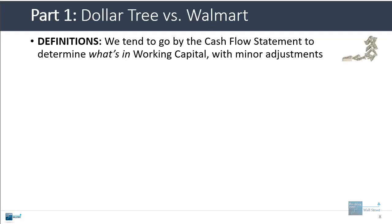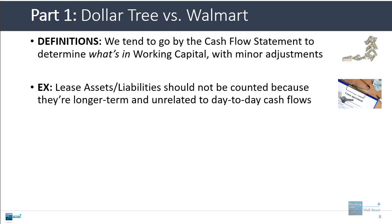With Dollar Tree and Walmart, the first point is that we need to determine what goes in their working capital by looking at their cash flow statements and sometimes making a few minor adjustments. For example, some companies like to include the change in lease assets or lease liabilities within the change in working capital. We don't like to do this because it's a bit of a stretch to say that they're related to the day-to-day cash flows and operations of a company — they're really more about long-term decisions.